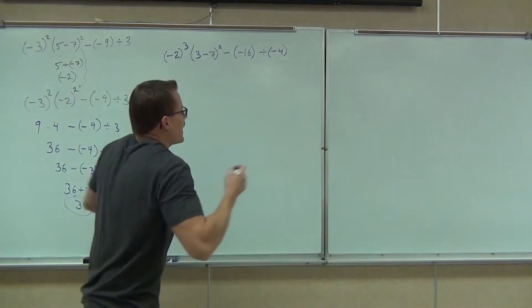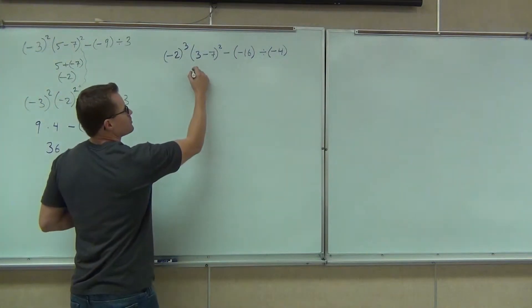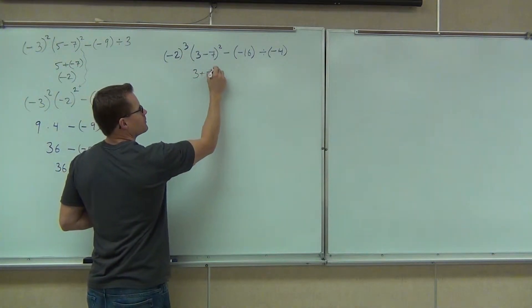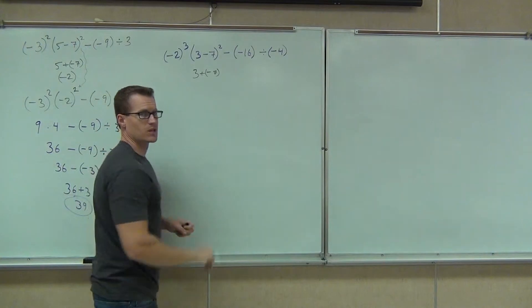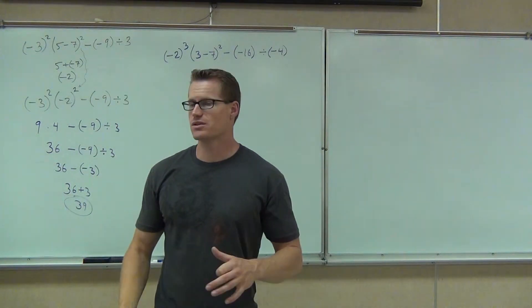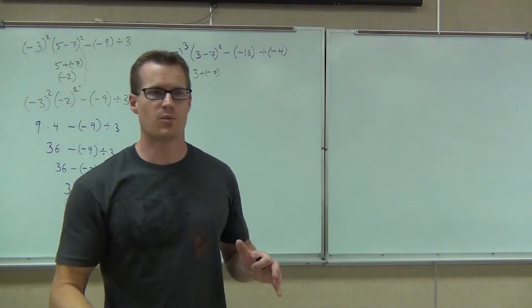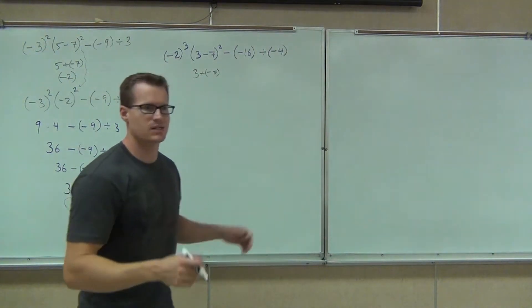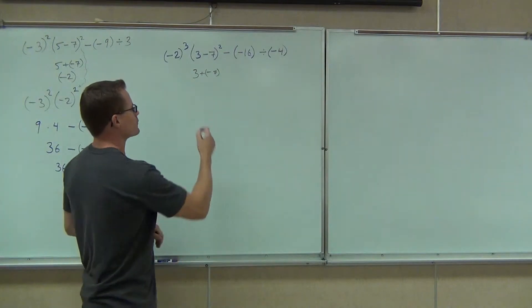I'd like you to show it. Let's just see 3 plus negative 7. That's going to give us negative 4 by the addition rule. Different signs, you subtract and keep the sign of the larger number — you get negative 4.